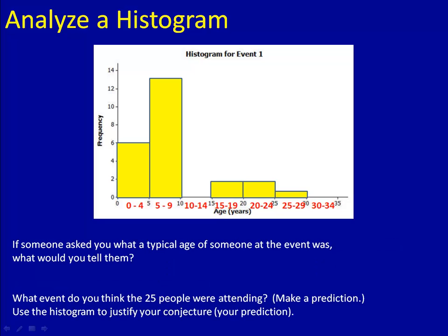Now here's a couple more questions for you, and I'd like for you to write these off to the side in your notes so that we can talk about them in class. Suppose someone asked you what the typical age of a person at this event was. What age would you tell them? Second, what kind of event do you think this could be? Make a prediction. You could come up with anything, as long as it makes sense for the ages that we have. What type of event do you think they're attending? And justify your conjecture, or your prediction, using the histogram. Why do you think it could be this type of an event? Please pause the video here, and then come on back.